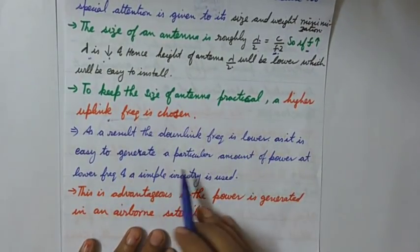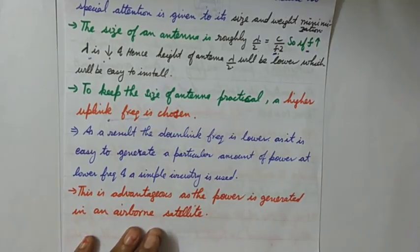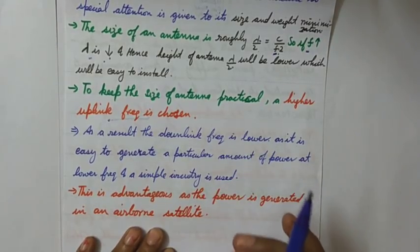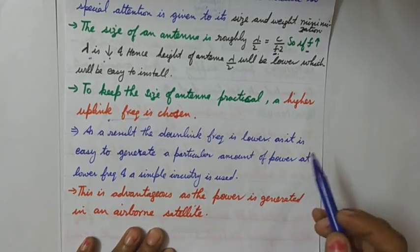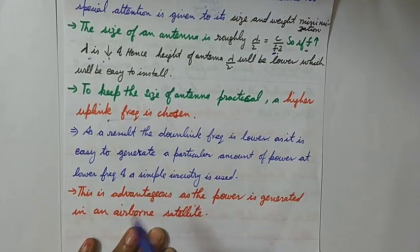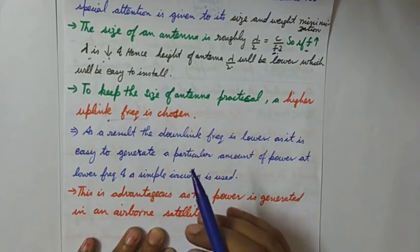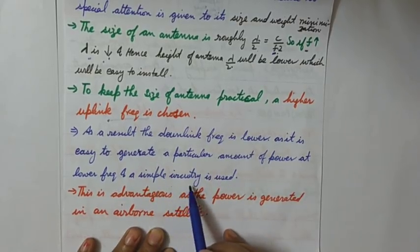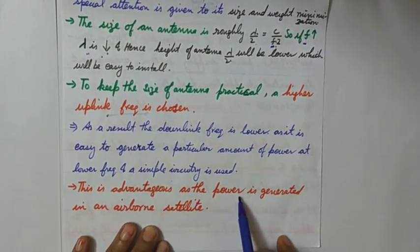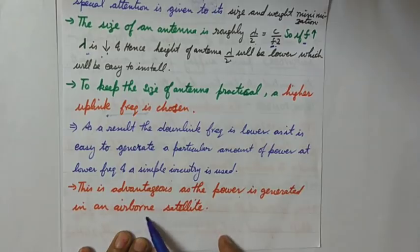And due to this, what is the benefit of keeping the downlink frequency low? It is that at a low frequency if you want to generate a particular power, we need a particular power to be generated, then at a low frequency it is easy to achieve that power level with a simple circuitry.